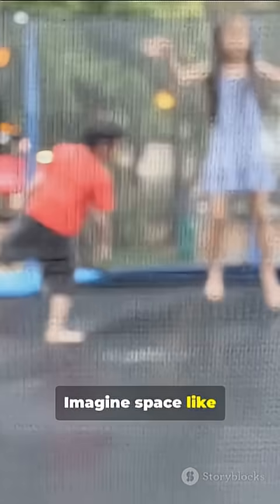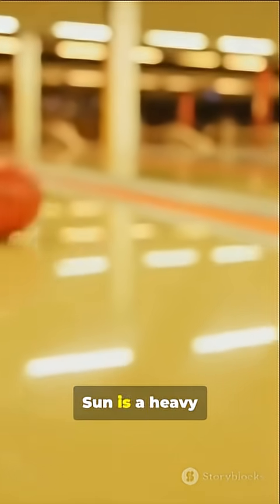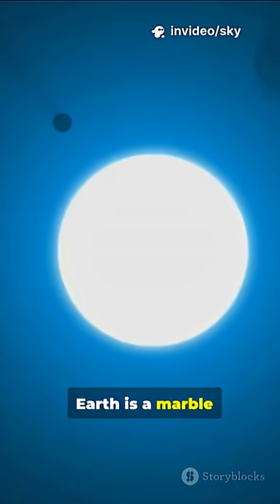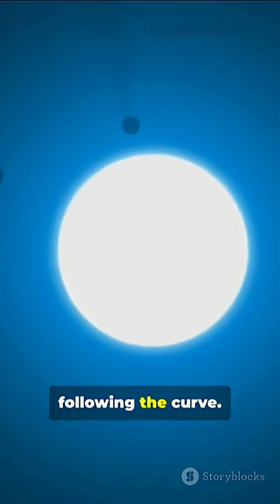Imagine space like a trampoline. The sun is a heavy bowling ball in the middle. It bends the trampoline down. Earth is a marble rolling around that dip. It orbits because it's following the curve.